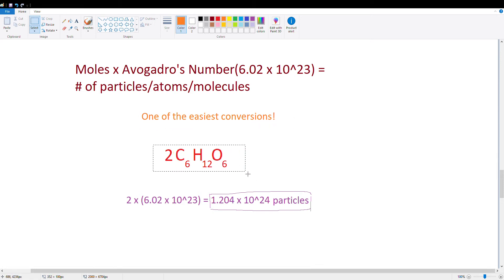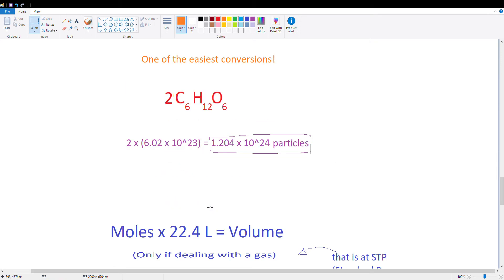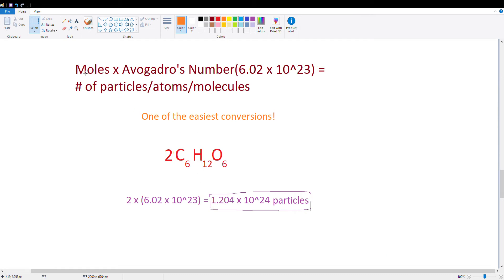So take this formula here that we had above, 2 moles of C6H12O6. All we have to do is multiply the moles, which is 2. Multiply the moles by Avogadro's number. So that's 2 times 6.02 times 10 to the 23rd power. And we get 1.204 times 10 to the 24th particles that are in this formula.